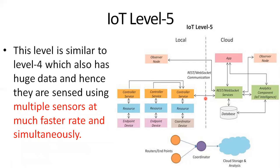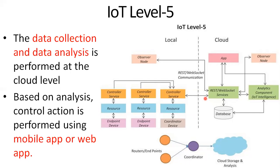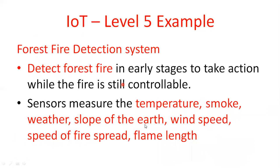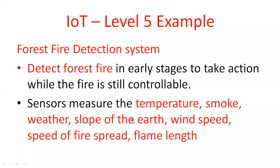This is called level five, suitable for wireless sensor networks in which the data involved is big and analysis requirements are computationally intensive. This is level two similar to that, but with multiple sensors at a faster rate simultaneously. Data collected and analysis is performed at the cloud level, and control actions are performed using mobile and web applications. In this case, the sensors measure temperature, smoke, weather, slope of the earth, wind speed, and speed of fire spread and flame length.